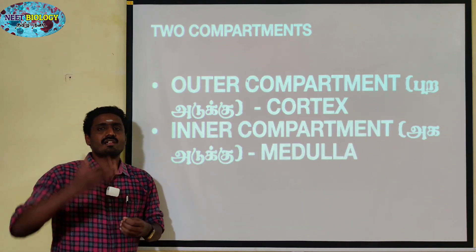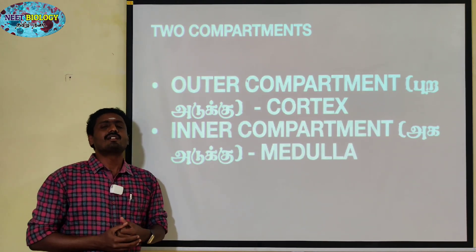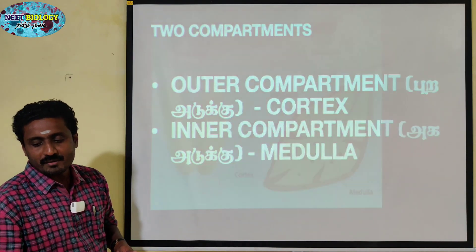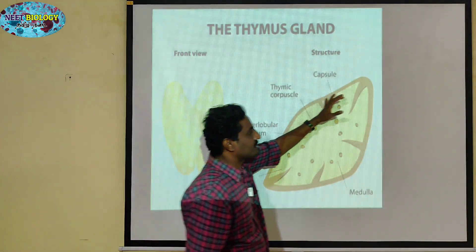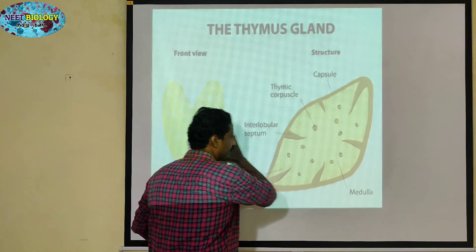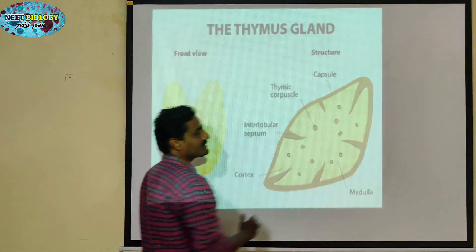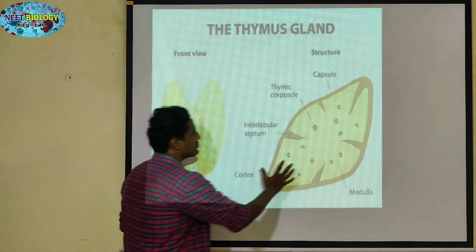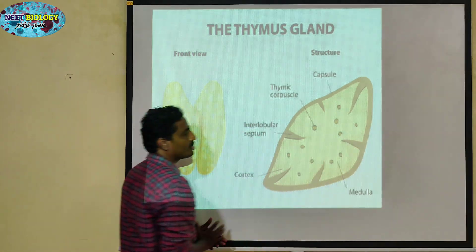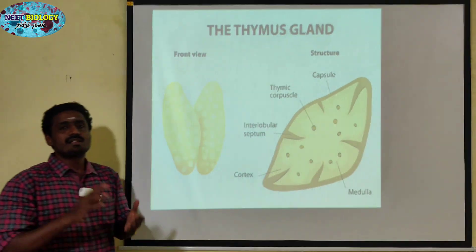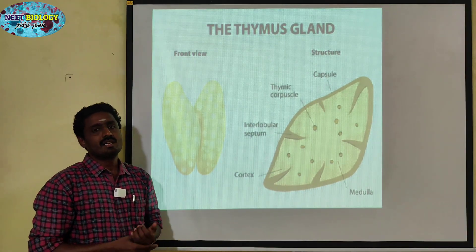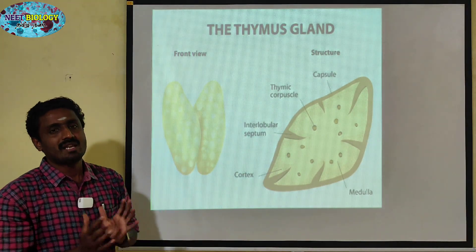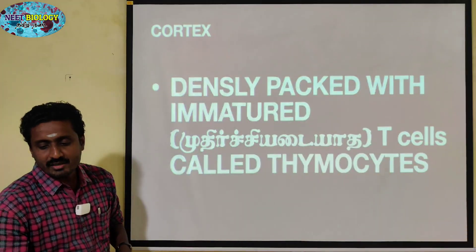The internal structure is what we can see here. Now we can see here a cross section. This is the internal structure — this is the cross section. It consists of many lobules.